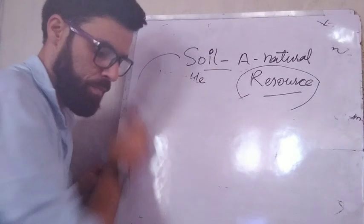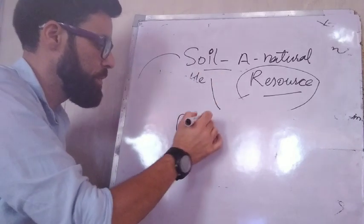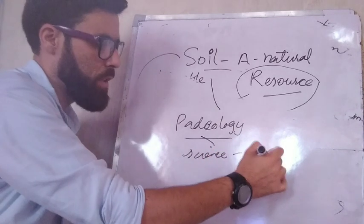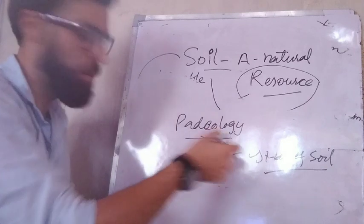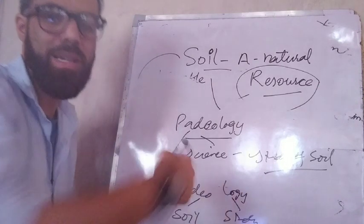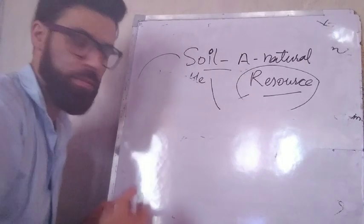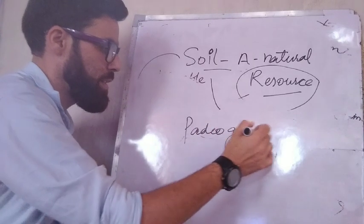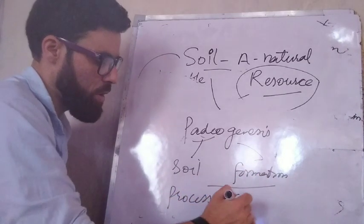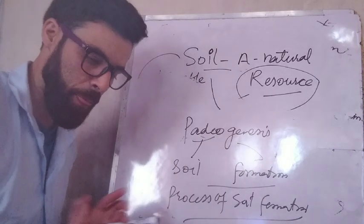Now let's check another fact about soil — how is soil formed? First, pediology is the branch of science that deals with the study of soil. 'Pedio' means soil and 'logy' means study, so it is the science of soil — we can call it soil science. Then we have pedogenesis: 'pedio' means soil and 'genesis' means formation, so pedogenesis is the process of soil formation. Pedogenesis shows us how soil is formed.